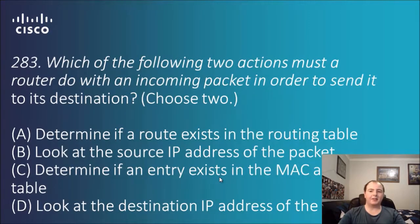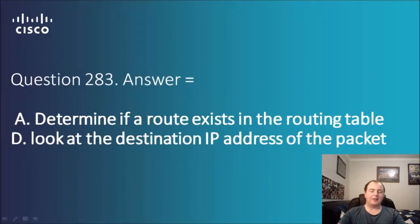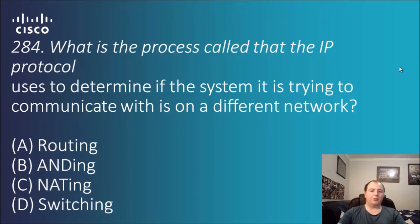Question 283: which of the following two actions must a router do with an incoming packet in order to send it to its destination — choose two. Options: determine if a route exists in the routing table; look at the source IP address of the packet; determine if an entry exists in the MAC address table; look at the destination IP address of the packet. The answers are A and D: determine if a route exists in the routing table, and look at the destination IP address of the packet. It doesn't really care where the packet came from — it just needs to know where it's going and ensure the route exists.